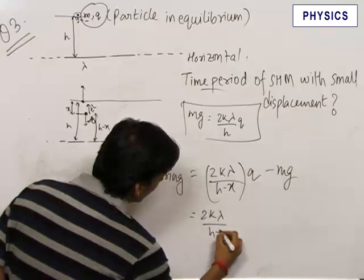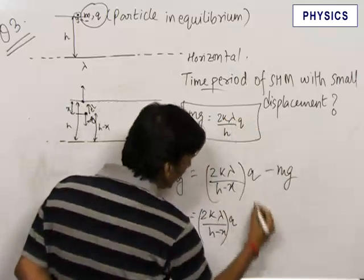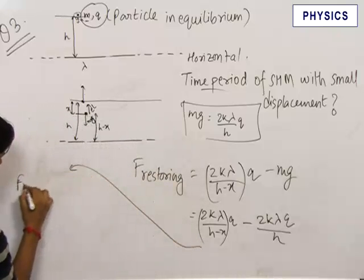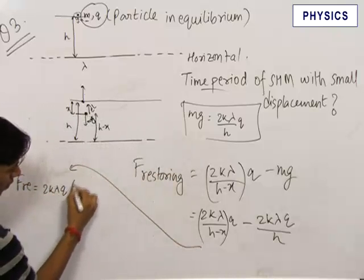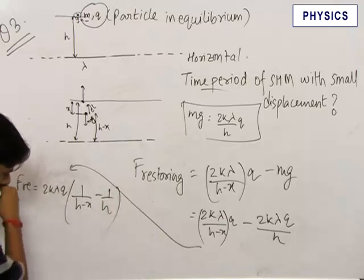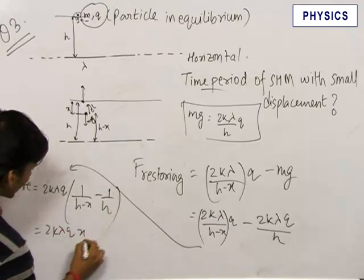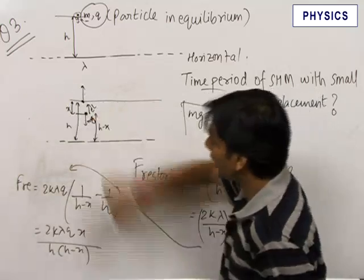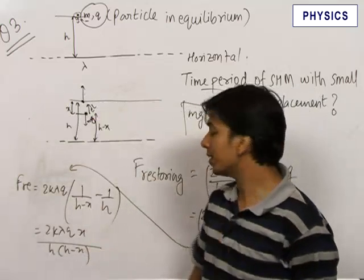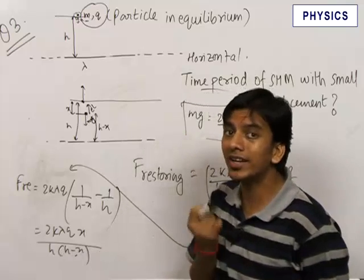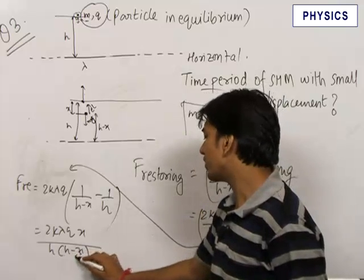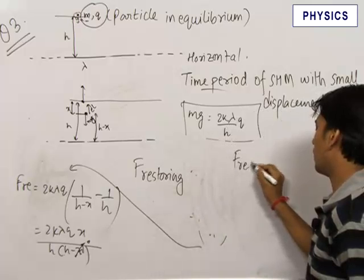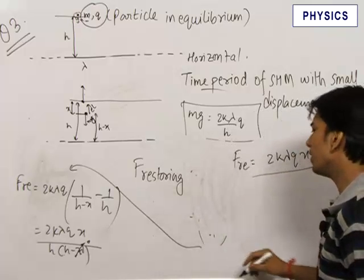Substituting mg as 2k lambda q upon h from the equilibrium condition, and taking 2k lambda q common, we get the restoring force equal to 2k lambda q times [1/(h minus x) minus 1/h]. Since the displacement x is very small compared to h, we can neglect x in the subtraction. This gives the restoring force equal to 2k lambda q times x upon h squared.